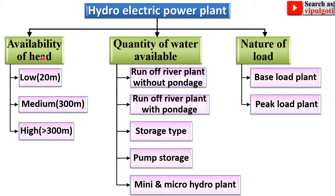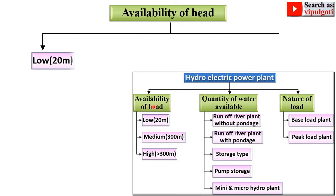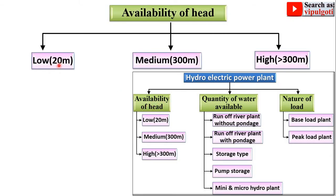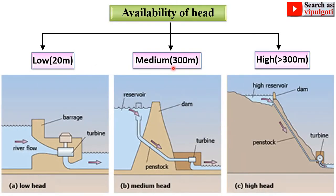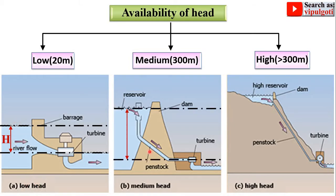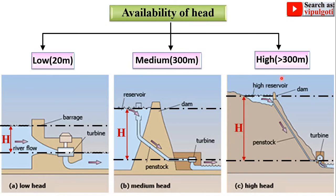According to the availability of head, it is classified into three different categories. Here you can see the head race level and the tail race level — the difference between these two levels is called the head. This is less than 20 meters for the low head power plant, up to 300 meters for the medium head, and more than 300 meters for the high head.